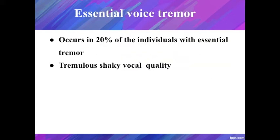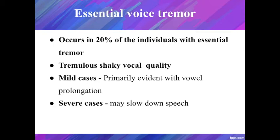Essential voice tremor occurs in about 20% of individuals with essential tremor. It is characterized by a shaky vocal quality caused by involuntary contractions of the vocal folds and vertical laryngeal movements. In mild cases, the tremor is evident only during a prolonged vowel, but in severe cases the tremor may slow down speech.